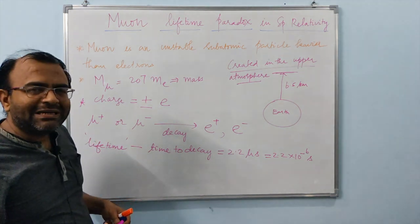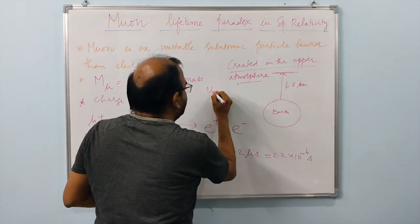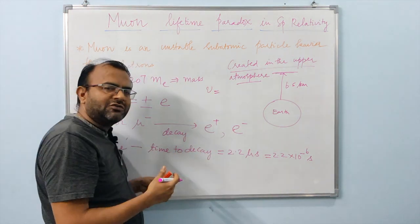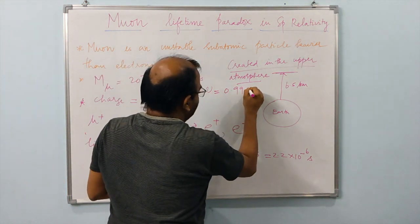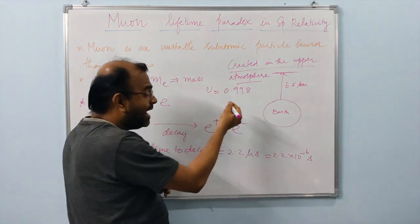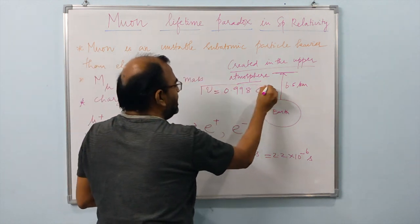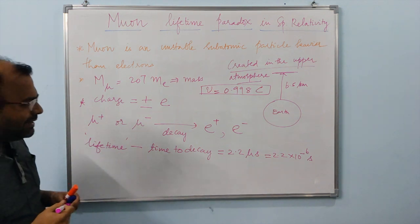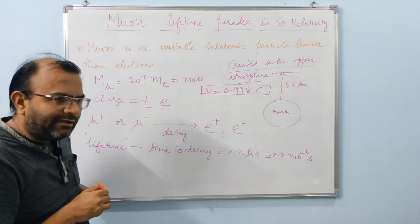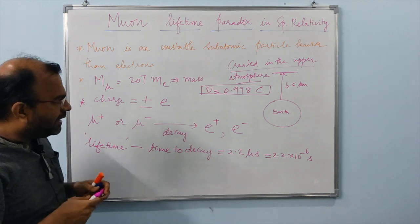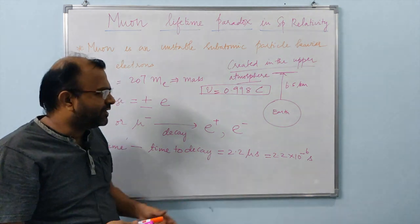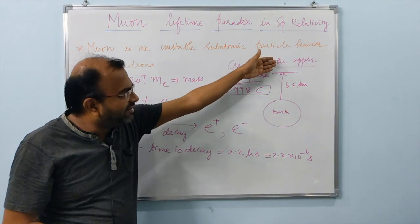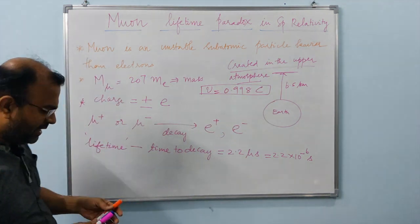These muons typically travel with speeds very close to the speed of light — about 0.998 times the velocity of light. At this velocity, given that their lifetime is very short at about 2.2 microseconds, we can calculate the distance the muons would be able to travel from the upper atmosphere to reach Earth's surface.